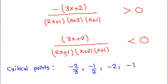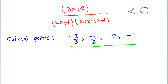Since (2x + 1), (x + 2), and (x + 1) are in the denominator, x cannot equal −1/2, −2, or −1. Also, because we have strict inequality, x cannot equal −2/3 either. So x ≠ −2/3, −1/2, −2, or −1.